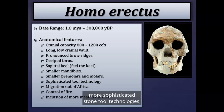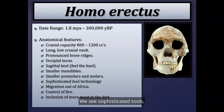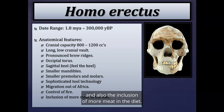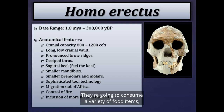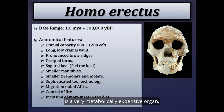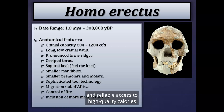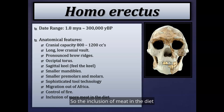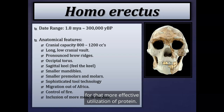Homo erectus utilizes what we call Acheulean tools, which we'll discuss further. Other features include migration out of Africa, control of fire, and inclusion of more meat in the diet. Hominids are omnivores, consuming vegetation, tubers, nuts, insects, and fruits, but by Homo erectus we see more meat in the diet. Some paleoanthropologists correlate this with cranial expansion, since the brain is a metabolically expensive organ requiring high-quality calories — and the inclusion of meat could have allowed more effective utilization of protein to support larger brain size.